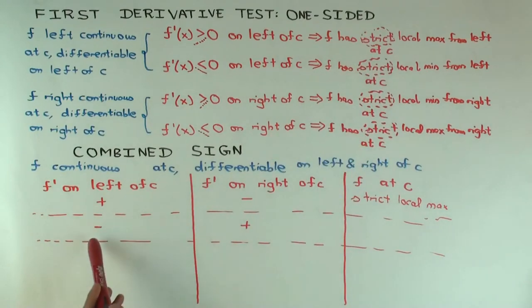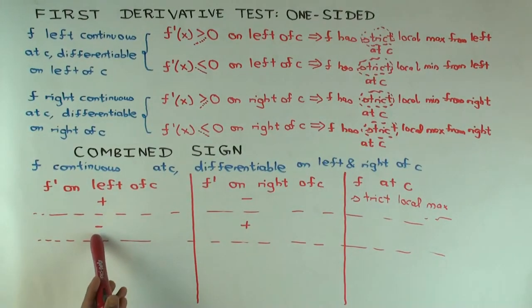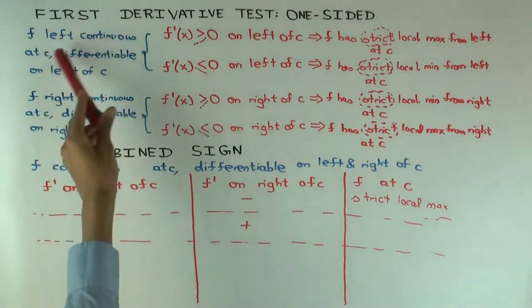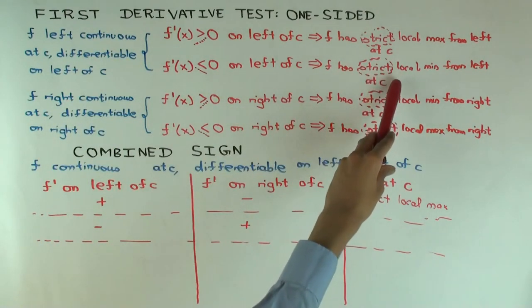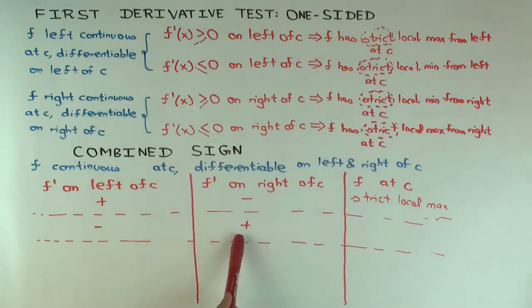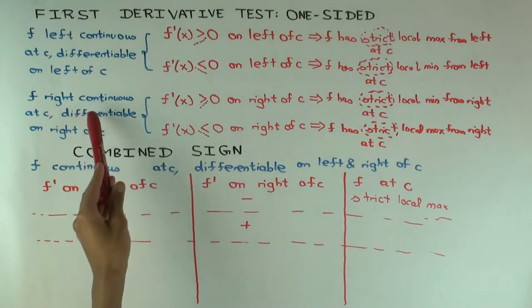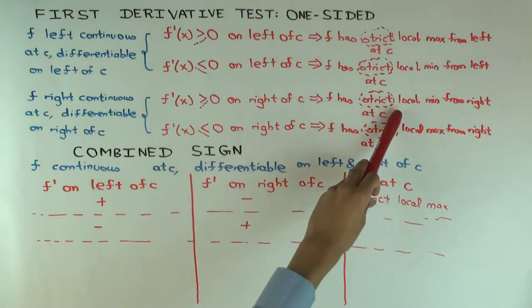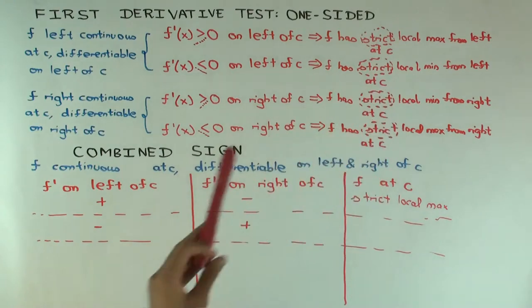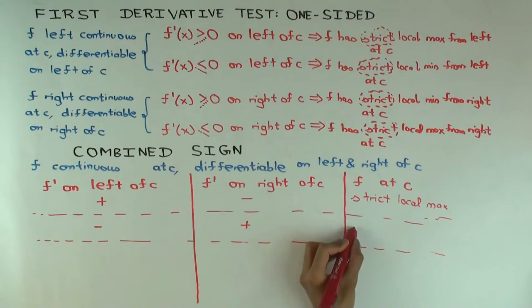f has a strict local minimum from the left. Well, how do we reason that? Just remind you, negative derivative means decreasing. Left continuous means you can extend the decreasing behavior to the point. And therefore, you get strict local minimum from the left. Positive behavior means positive derivative. Positive derivative means increasing. And because it's right continuous, you can extend the increasing behavior to the point. And therefore, you get strict local min from the right. So overall, what do you get? Strict local. Two-sided, right.